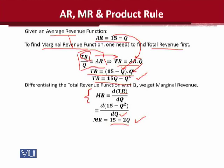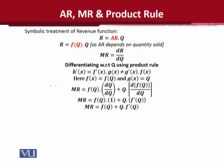We can also treat this in a symbolic way, and that I will show you. In symbolic way, with no numerics involved, f(Q) is multiplied by Q, because the average revenue after all depends on the output.